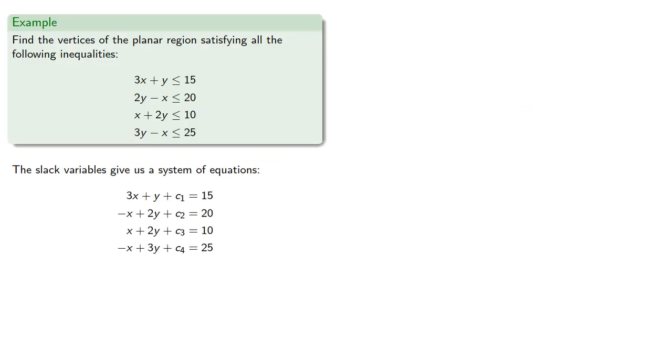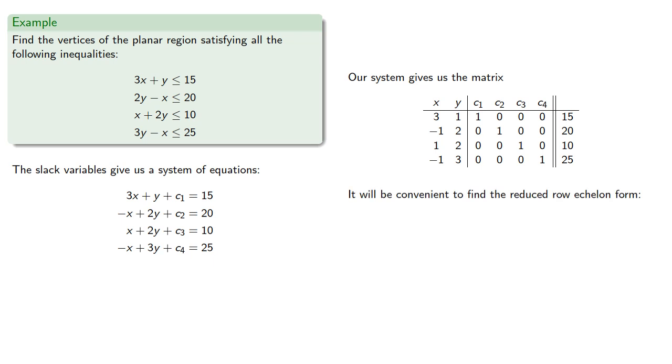So our system gives us the matrix. It will be convenient to find the reduced row echelon form.